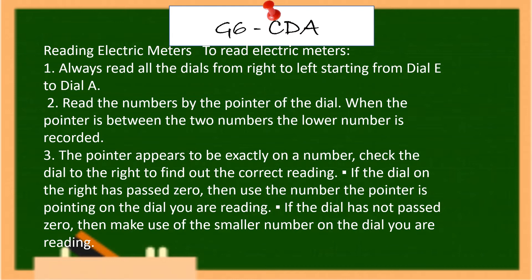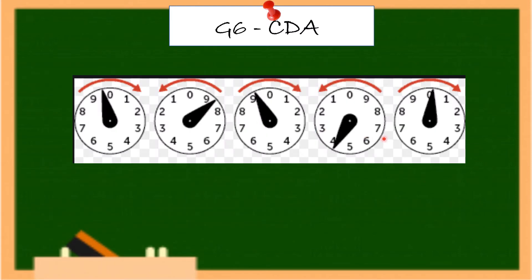How are we going to read electric meters? To read electric meters, always read all the dials from right to left, starting from dial E to dial A. Read the numbers indicated by the pointer of each dial. When the pointer is between two numbers, the lower number is recorded. As shown in the figure, the dials alternate clockwise and counterclockwise.